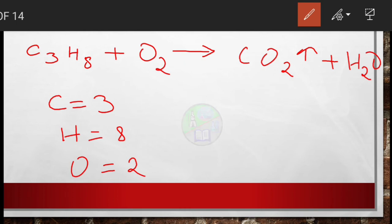In the product side, number of carbon atoms present is 1, hydrogen is 2, and oxygen is 3. So now as hydrogen atom is having more number of atoms in the reactant side, so to balance it, first of all we will multiply 4 to water on the product side. So now the number of hydrogen atom becomes 8 and they are balanced. Along with it, the number of oxygen atom also changed and it became 6.